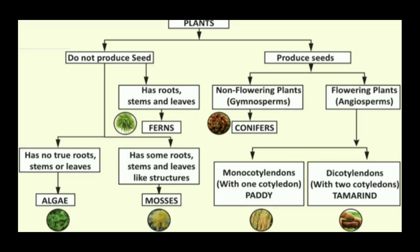Based on dichotomy — a tool used to classify organisms based on their characters; dichotomy means divided into two — plants are classified into two major groups: plants which produce seeds, and plants which do not produce seeds. The plants which do not produce seeds are classified into three groups: algae, mosses, and ferns.